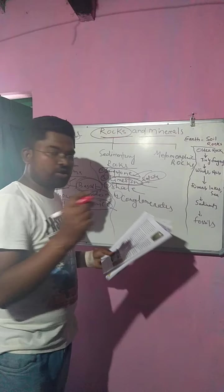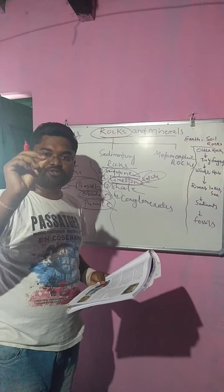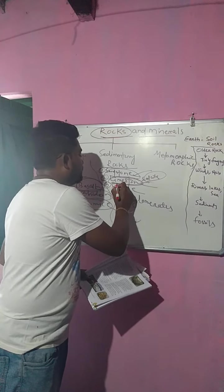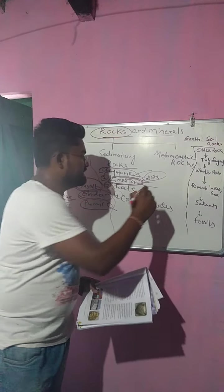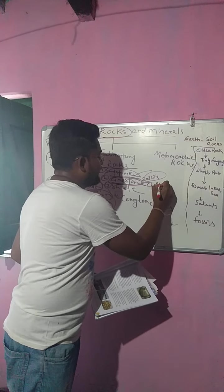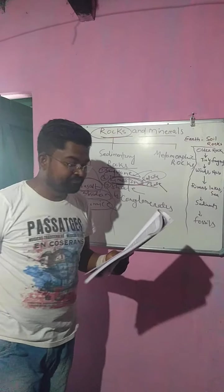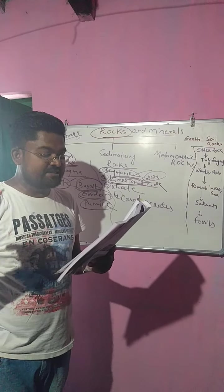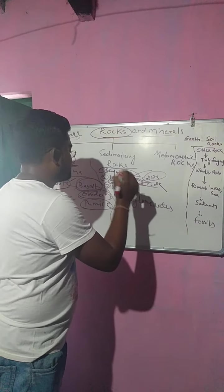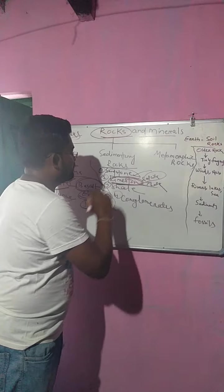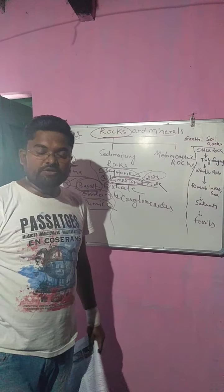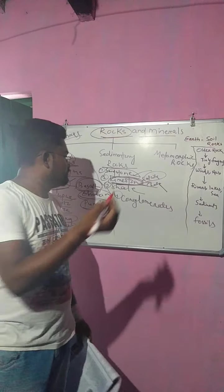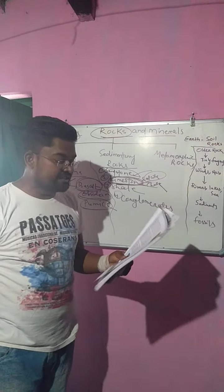You know the chalk that a teacher uses to write — chalk is also made by limestone. And limestone is used to make cement and bricks. So the use of limestone is to make cement and bricks.